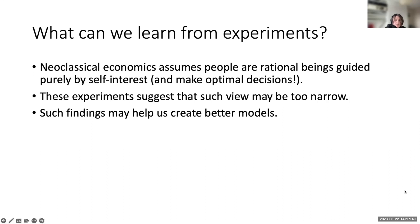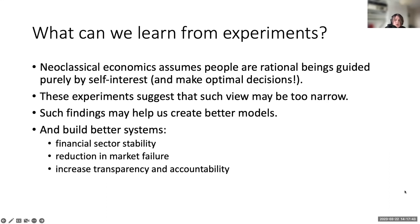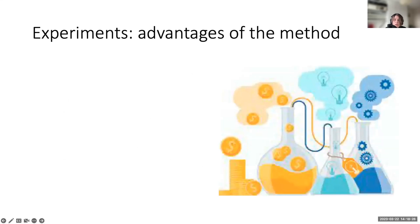What do we learn? Neoclassical economics assumes people are rational, purely self-interested, and make optimal decisions. These experiments suggest such a view is too narrow an understanding of social preferences. The disparity observed across individuals and groups can help us create models that better represent reality. For example, within the financial sector, research supports a positive relationship between trust and reciprocity and economic growth — seen in a reduction of loan defaults and the effectiveness of central banking policy. Understanding social preferences can also reduce transaction costs and increase transparency and accountability.